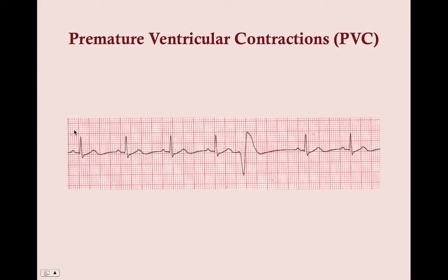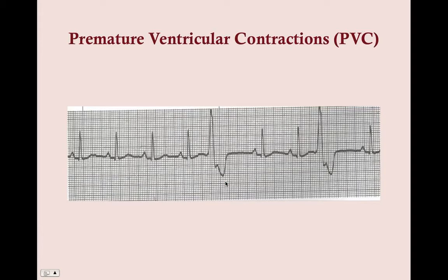On the ECG, during normal sinus rhythm you'll suddenly see a weird-looking QRS wave — some abnormal electrical activity representing a ventricular contraction caused from within the ventricle — and then it goes right back to normal sinus rhythm. This can be normal and fine in a patient and doesn't need treatment, but if seen frequently, we may need to look into an underlying cause.